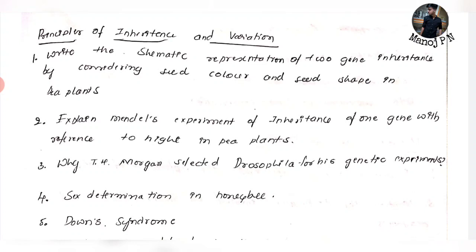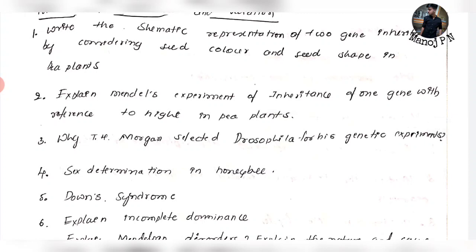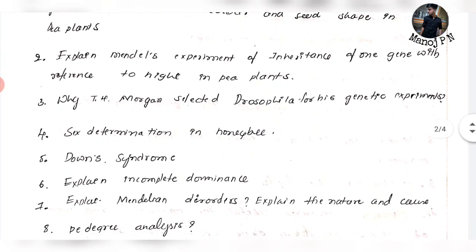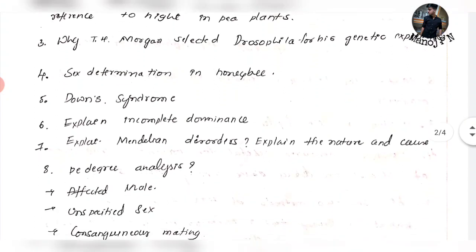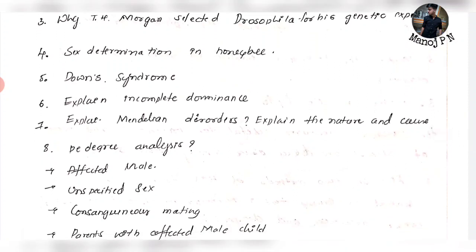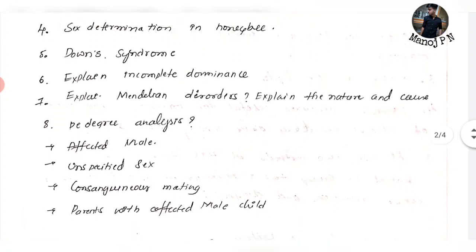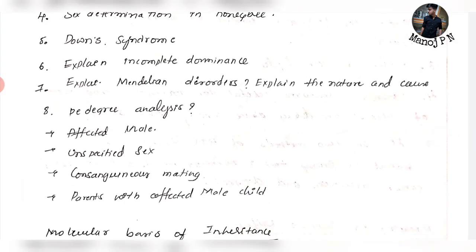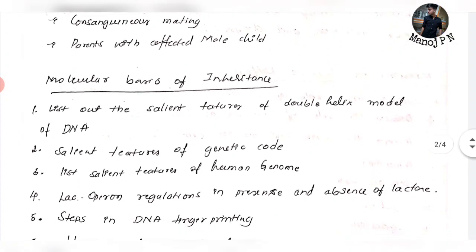First: write the schematic representation of two gene inheritance by considering seed colour and seed shape — this is the most important question, with about 80% chance of being asked. Then explain Mendel's experiment of inheritance of one gene with reference to height in pea plants. Also consider their genetic experiment and sex determination in honey bee, Down syndrome, queen, incomplete dominance, Mendelian disorders — all have to tell Mendelian disorders. Pedigree analysis is also important.